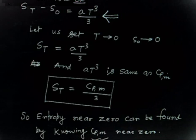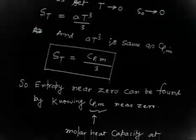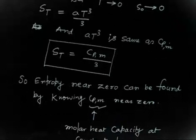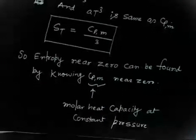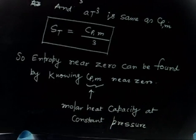One can be asked the objective question: what is the entropy of a substance whose molar heat capacity at constant pressure is Cpm? The answer is Cpm/3. So entropy near zero kelvin can be found simply by knowing Cpm — the molar heat capacity at constant pressure. This is quite an interesting result.